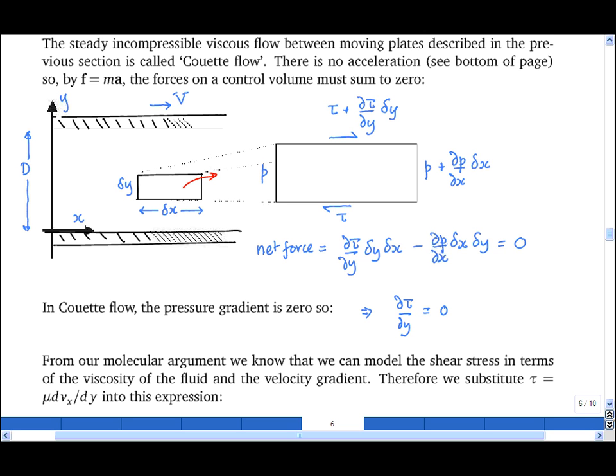That is, the gradient of the shear stress with y must be equal to zero. In this particular case, tau only varies in the y direction, so I can write this as an ordinary derivative. d tau by dy is equal to zero, and that's because the shear stress only varies in the y direction.